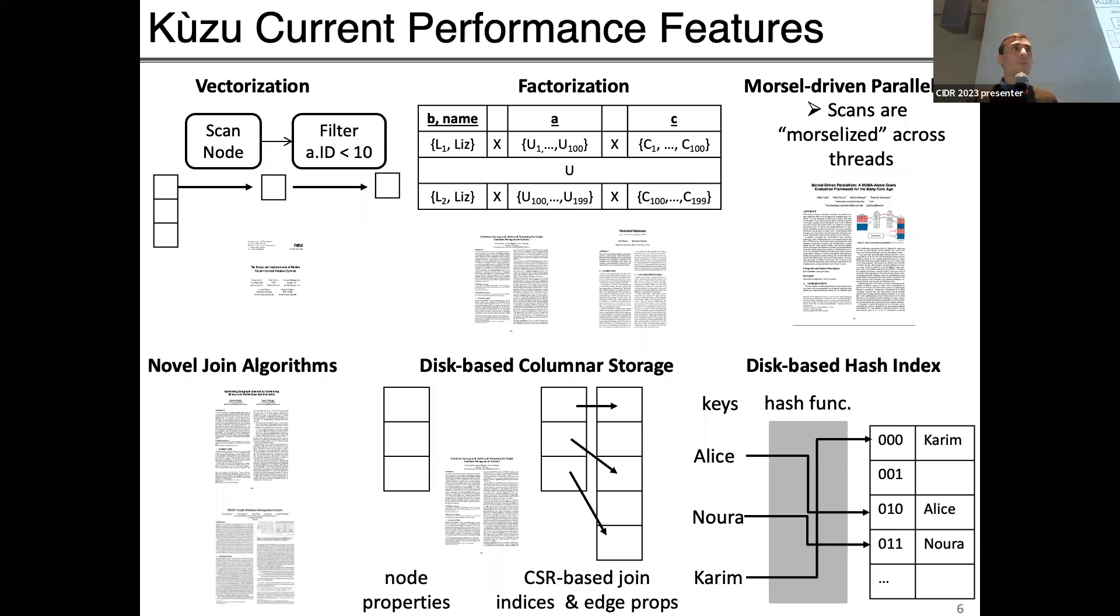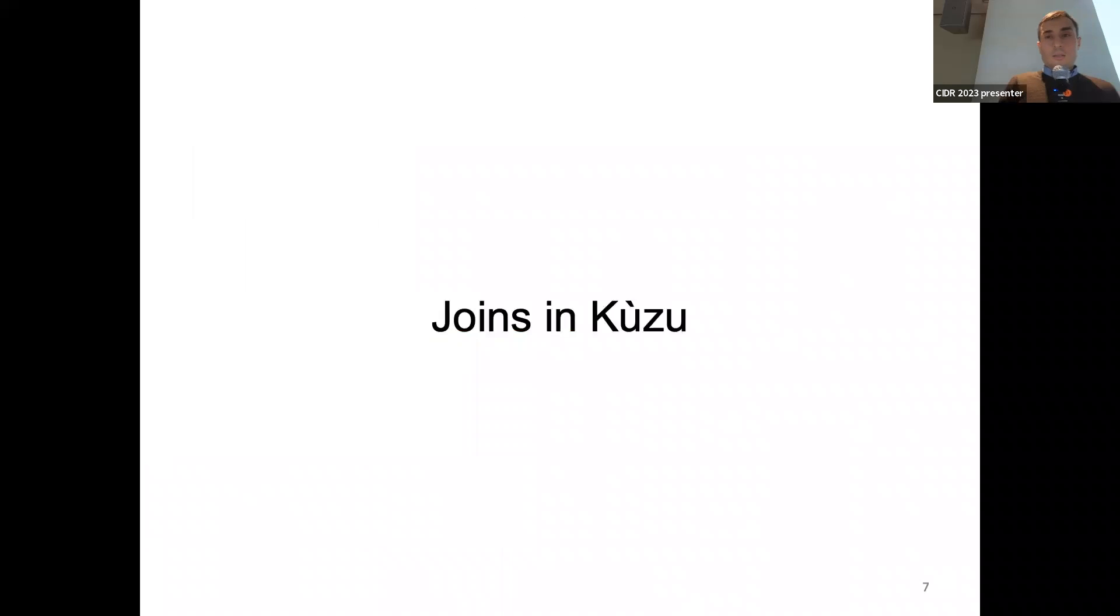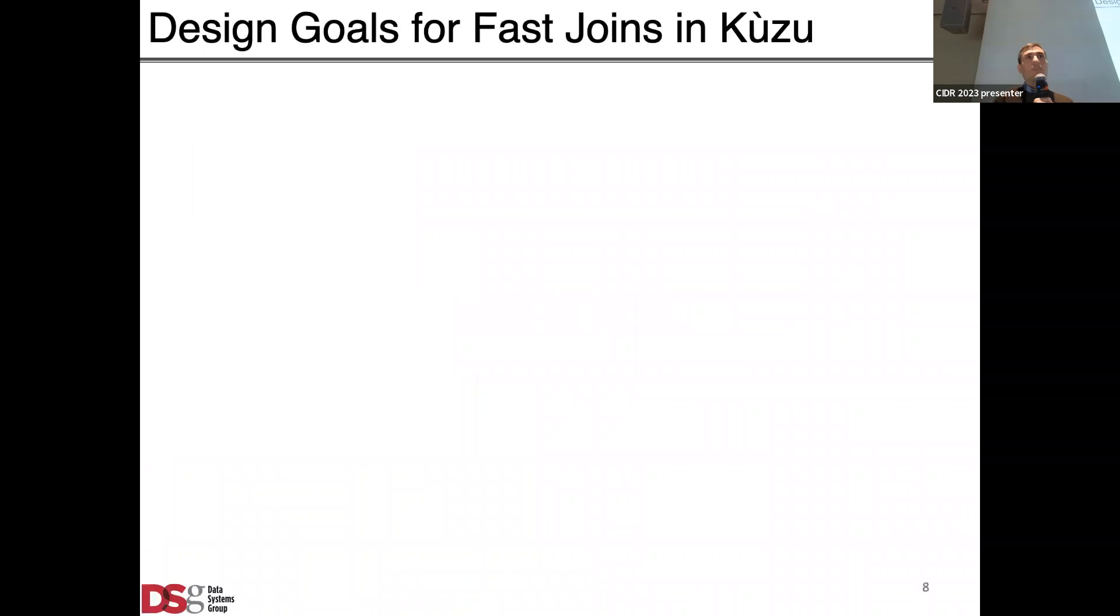In terms of its performance features we follow the principles of many columnar read optimized systems. We have for example columnar storage, columnar CSR based join indices which is a very popular compressed columnar format to store graphs and we have disk versions of that. It's a vectorized system but we also have several optimizations that I'll talk about like factorization and novel join algorithms.